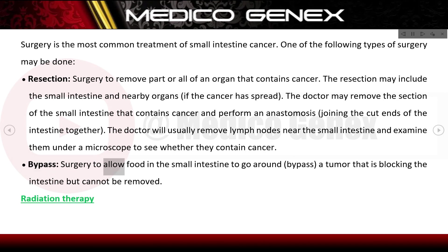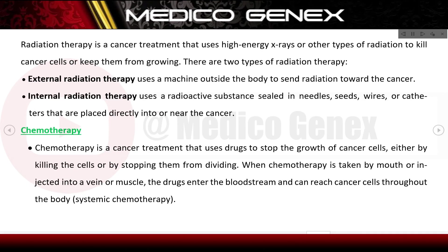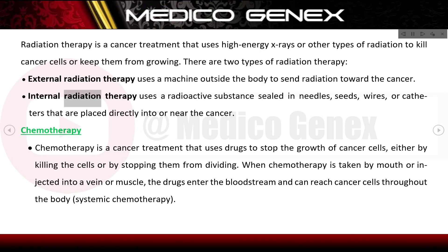Bypass surgery allows food in the small intestine to go around a tumor that is blocking the intestine but cannot be removed. Radiation therapy is a cancer treatment that uses high-energy x-rays or other types of radiation to kill cancer cells or keep them from growing. External radiation therapy uses a machine outside the body to send radiation toward the cancer. Internal radiation therapy uses a radioactive substance sealed in needles, seeds, wires, or catheters placed directly into or near the cancer.